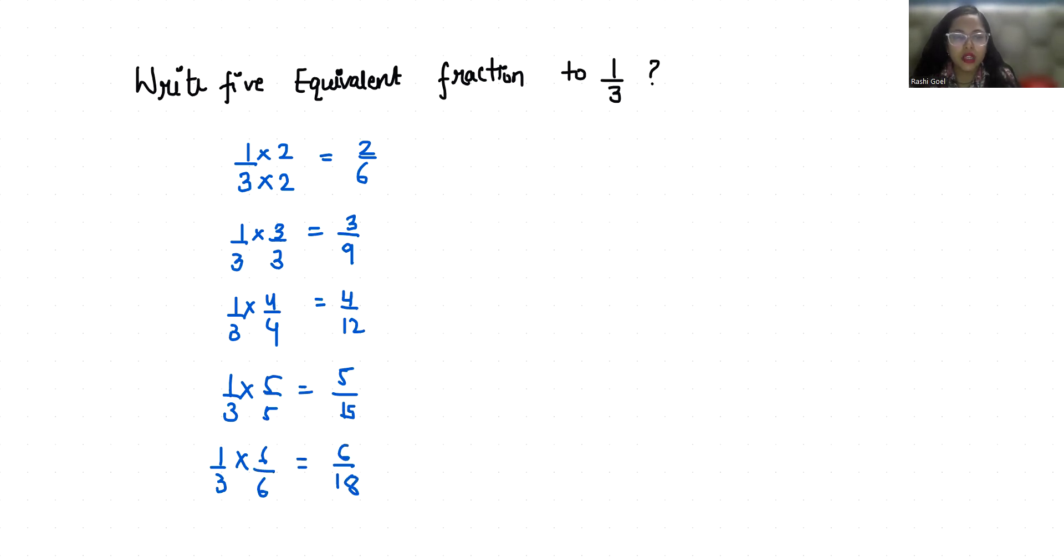So when we reduce all of them, they all equal 1/3: 2/6, 3/9, 4/12. So that means if you make any change in the numerator, you have to make the same change in the denominator.